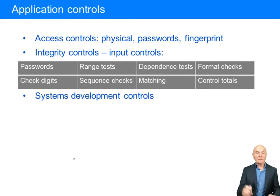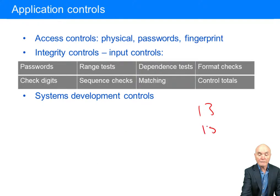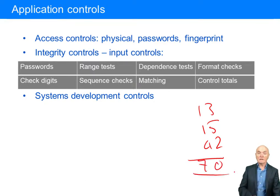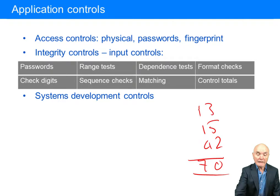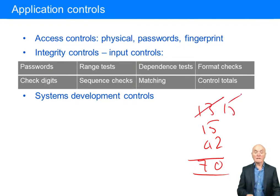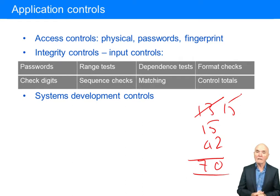Control totals: if you're putting in three invoices, you first add them up — so here we have, say, figures totalling 70 — that's your control total. You put that in first, and if somebody mistypes and puts in 15 instead of 5, it's obviously not going to reconcile. Control totals and batch totals were a very powerful way of trying to control the completeness and accuracy of data being put in.